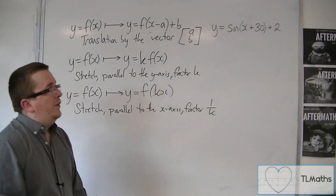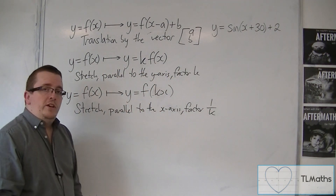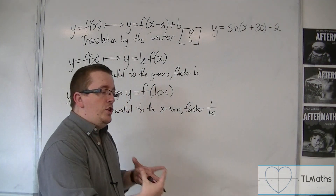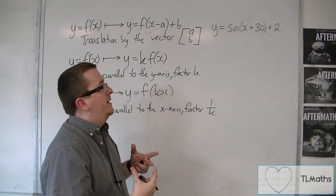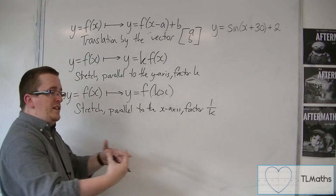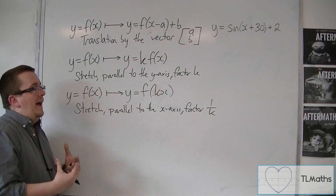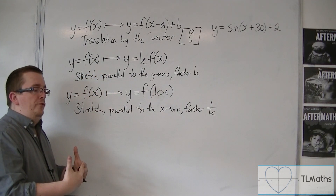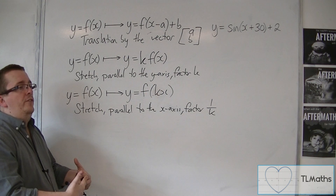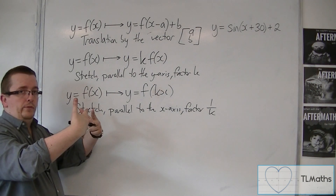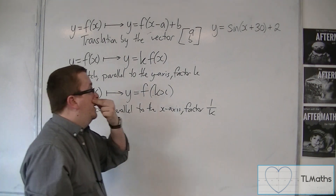So what that does is shift the sine curve 30 degrees to the left and move the sine curve 2 units upwards.